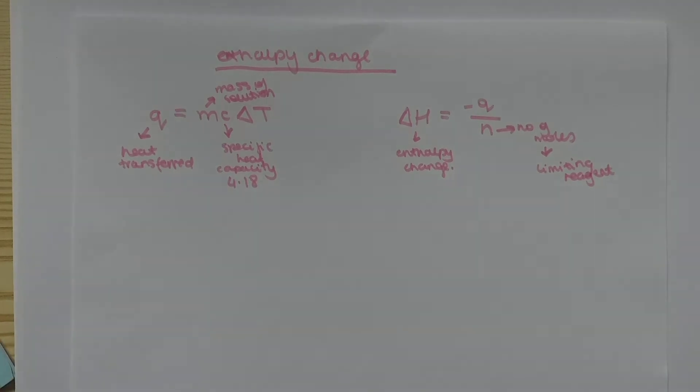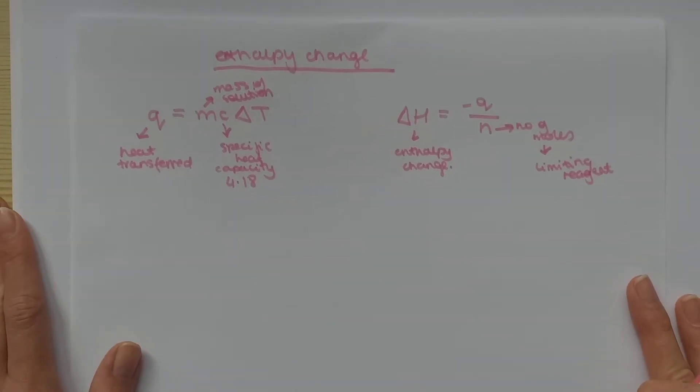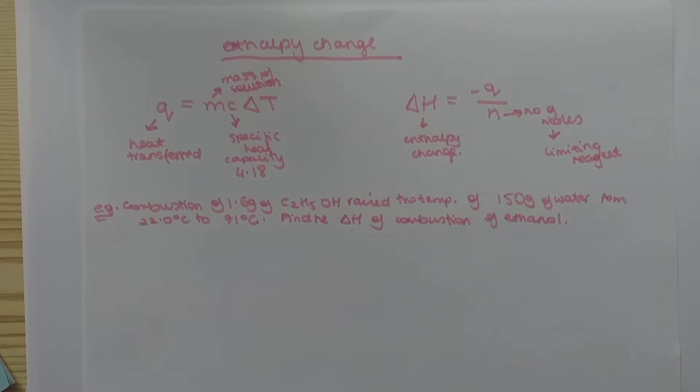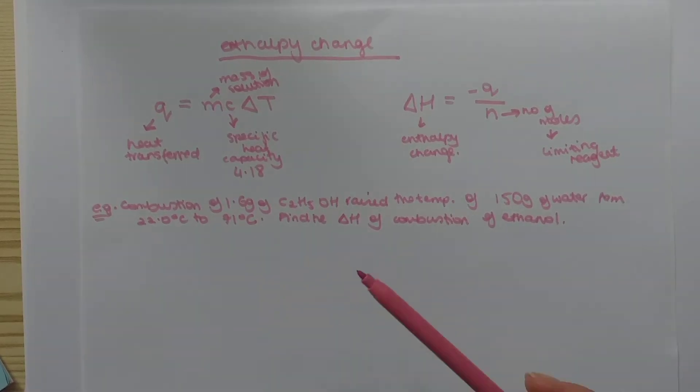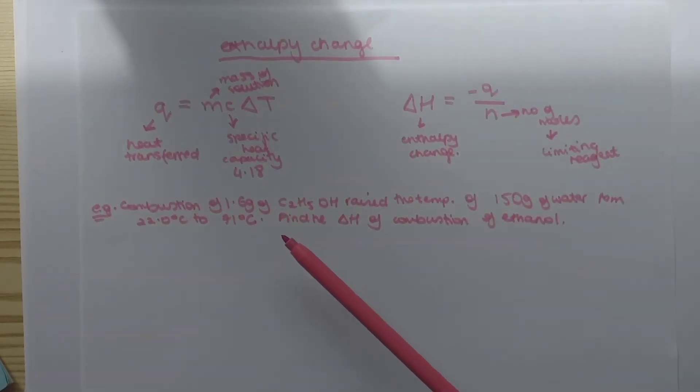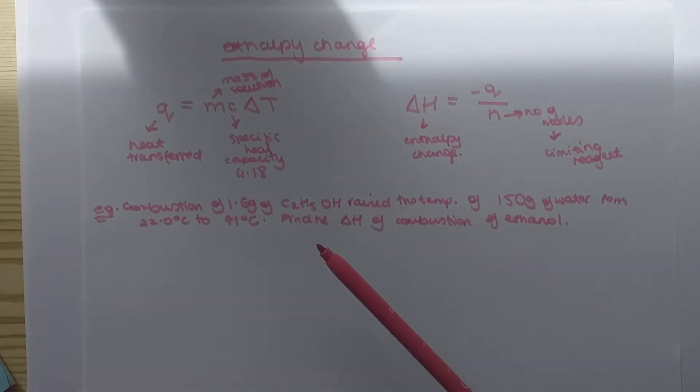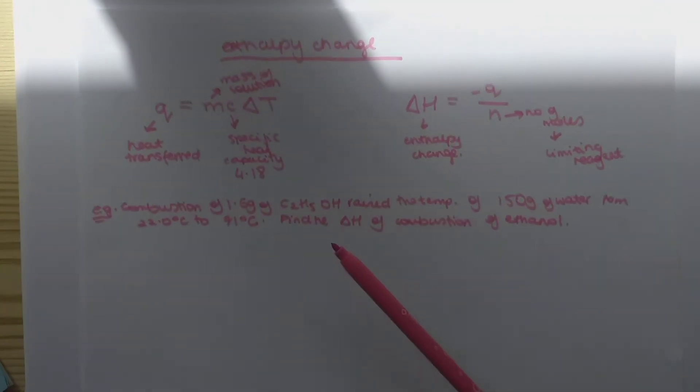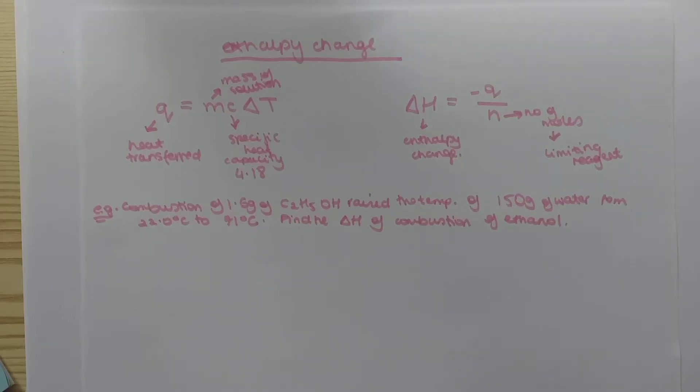I think the best thing to do is work for an example. Here's a question. Combustion of 1.6 grams of C2H5OH raises the temperature of 150 grams of water from 22 degrees Celsius to 71 degrees Celsius. And now we are asked to find the enthalpy change of combustion of ethanol.